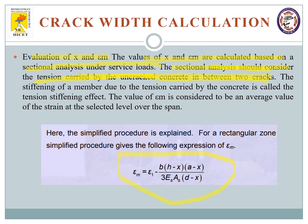This is given by a simple formula. Epsilon M is given by epsilon 1 minus (b times (h minus x) times (a minus x)) divided by (3 times Es times As times (d minus x)). In the next slide, we will deal with what these notations are.